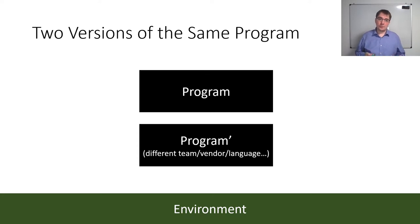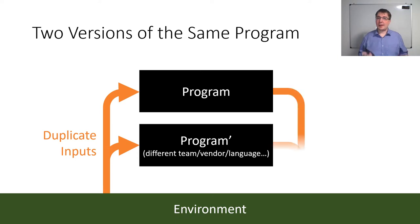We have two or more programs. One of them might be seen as the original one, though it doesn't really matter, and the others may have been written by different teams, different vendors, maybe in different languages. Both of them communicate with their environment and the monitor sits exactly between these programs and the environment, duplicating any inputs that come from the environment and intercepting any outputs coming from the programs, checking them for equivalence and merging them before sending them off to the environment.